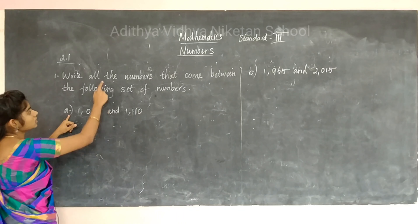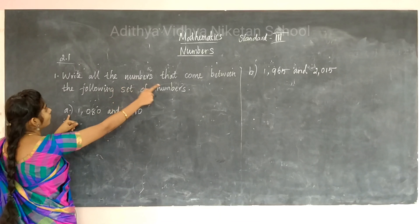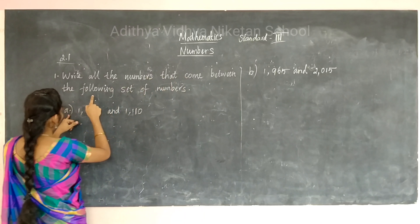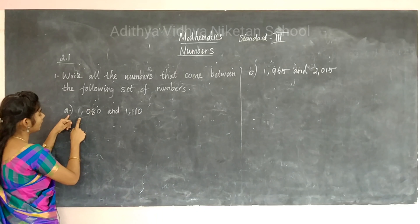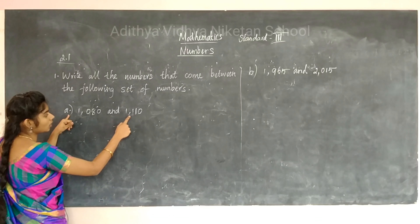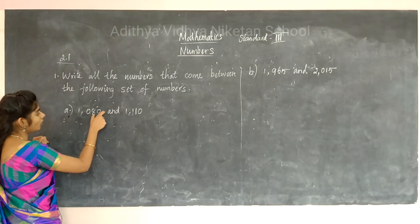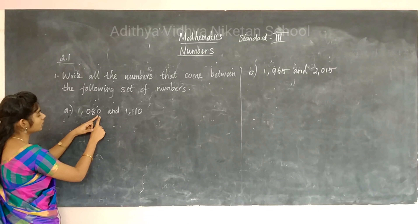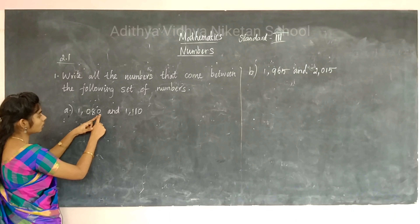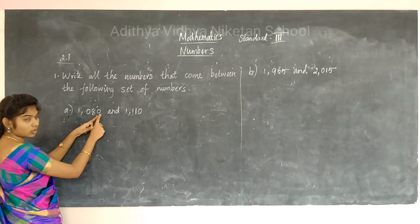Let's see the first sum. We need to find all the numbers between 1080 and 1110. What is the number next to 0? It is 1. So we start writing from 1081.